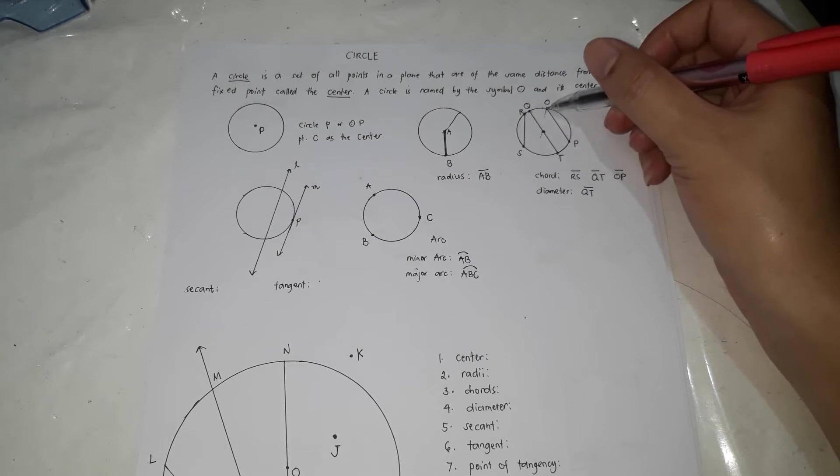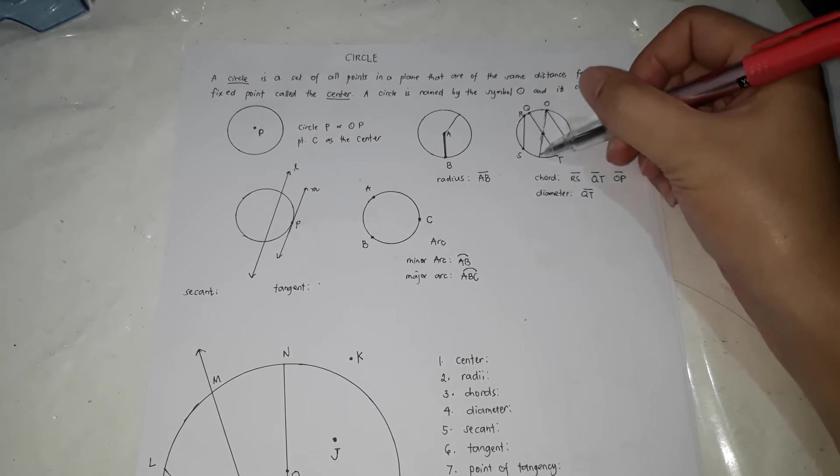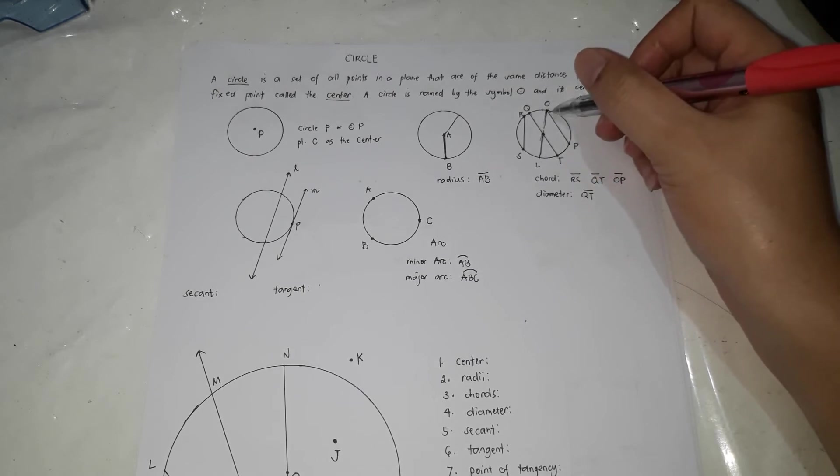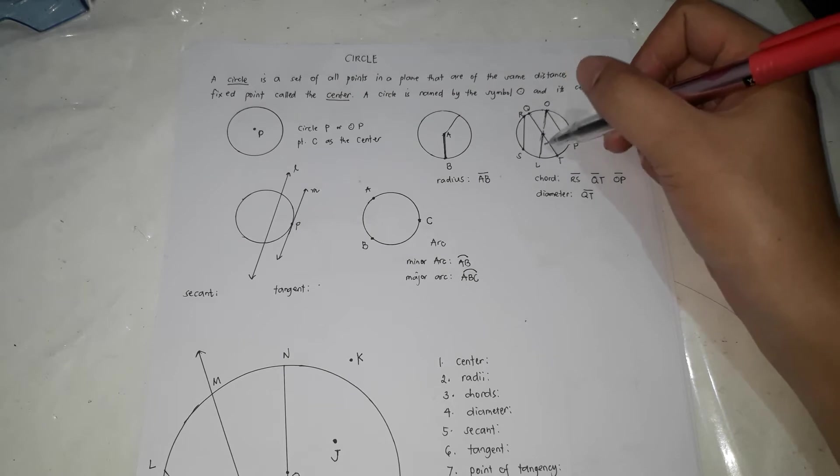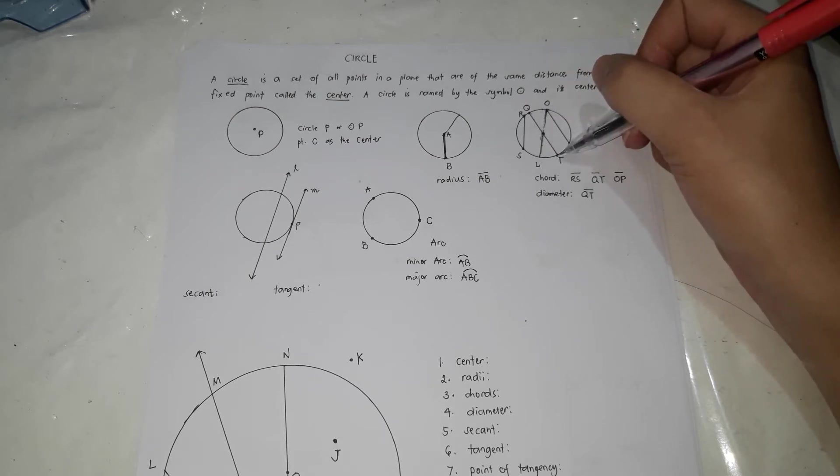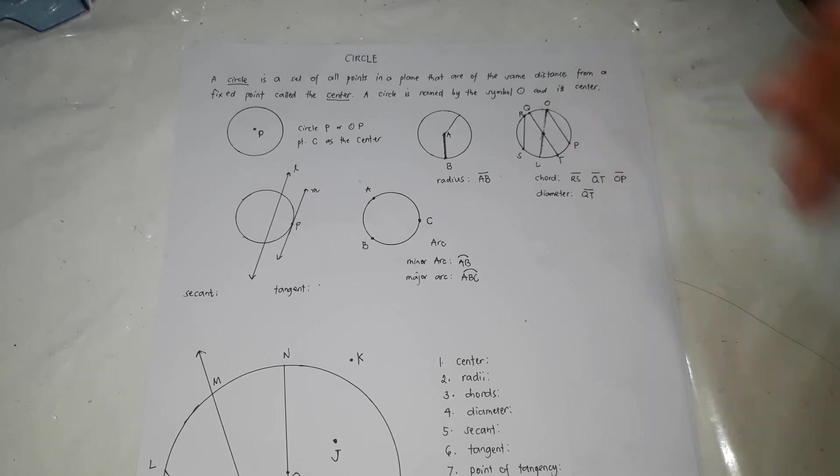If you draw a line again or draw a chord here, so if this is L, this is chord or line segment OL. This is a chord and this is also a diameter. This has the same distance with QT. OL has the same distance with QT. They are congruent.